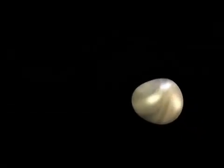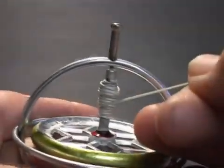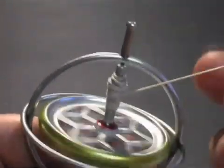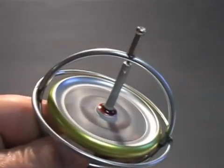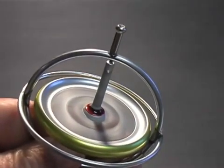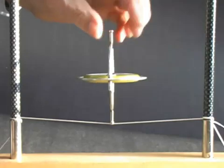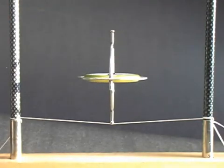To change the direction of the stone requires a force. Similarly, changing the orientation of the rotating wheel requires force. The spinning wheel prefers to stay oriented as it is, and it resists any attempt to change that orientation.